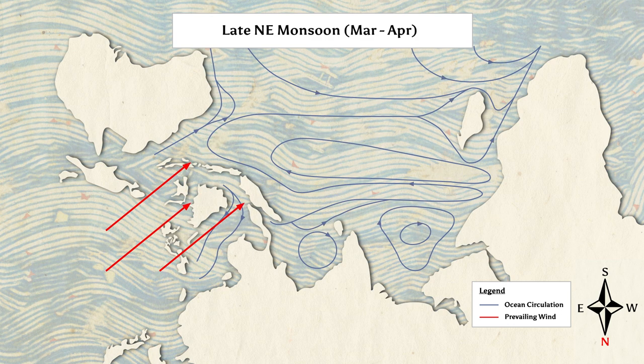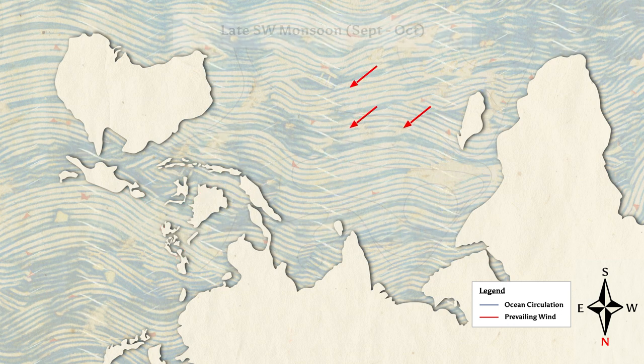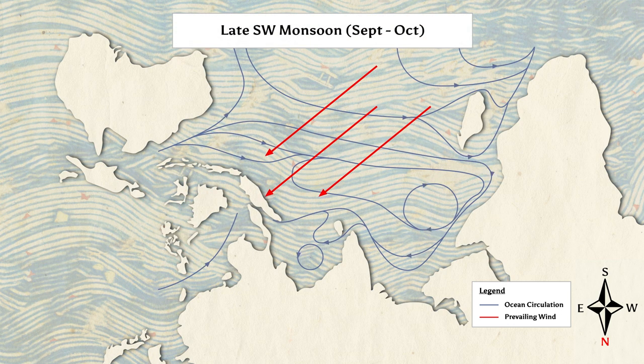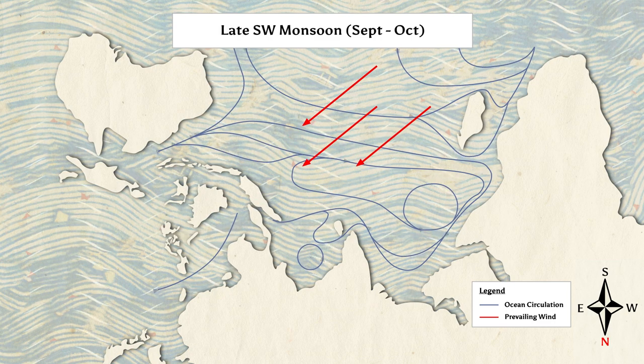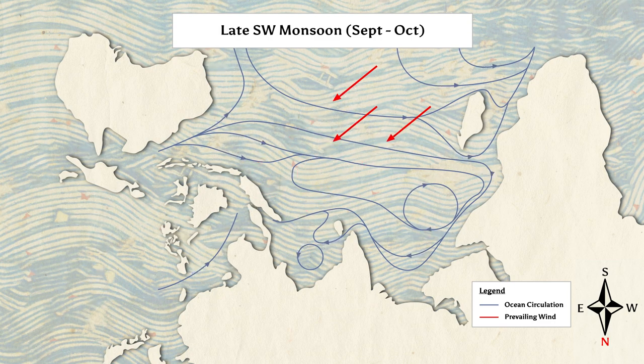Such seasonal changes in wind and ocean circulation have traditionally shaped the navigation patterns of ships, especially for maritime societies.